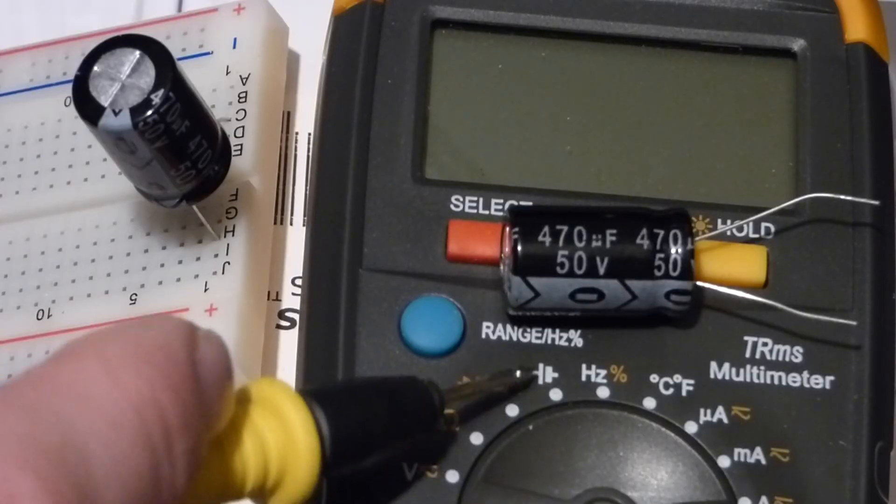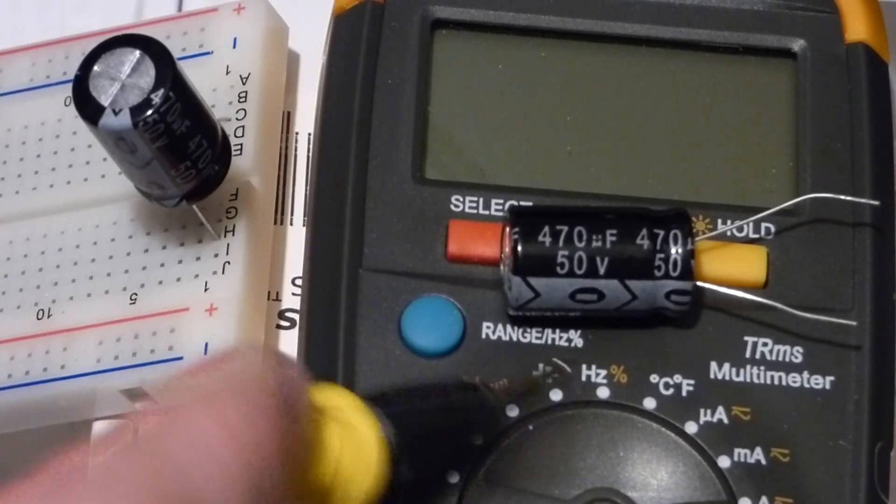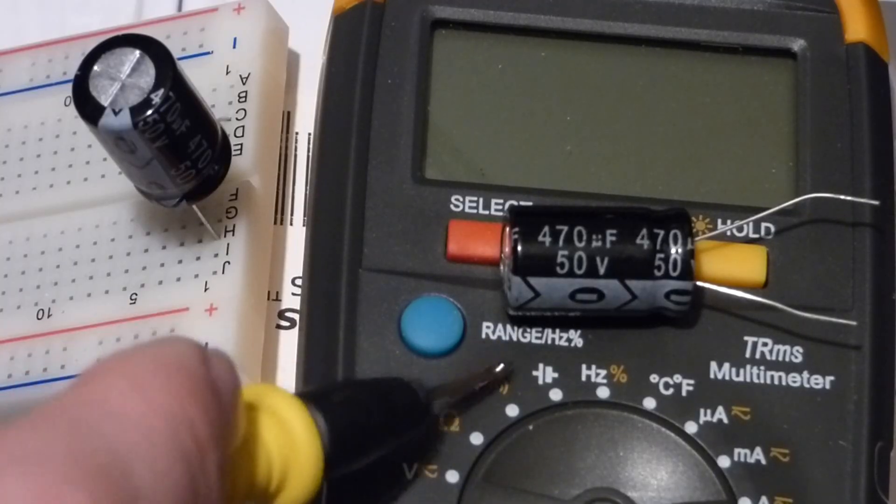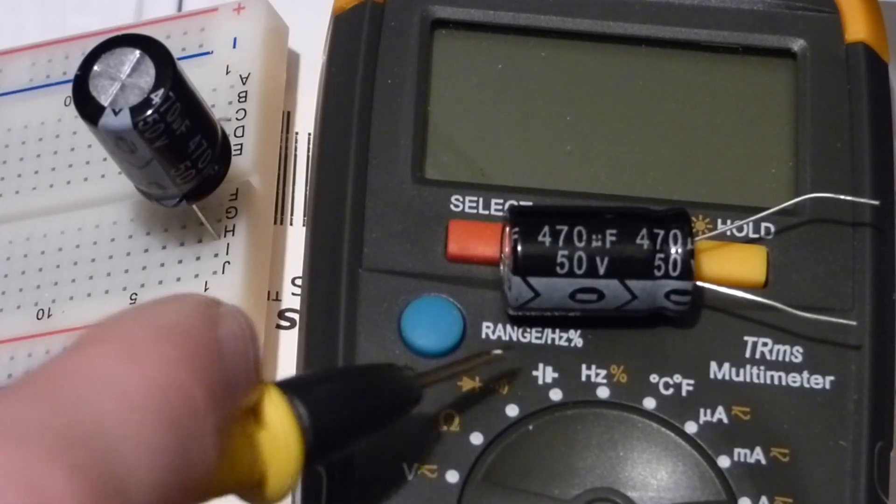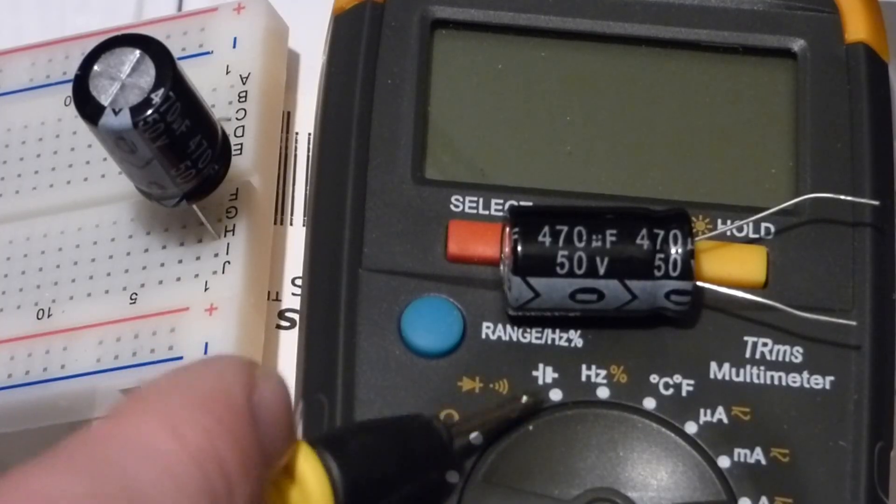Now we also have this multimeter. This multimeter can measure capacitance as shown in this symbol. Not all multimeters can measure capacitance. So if you want one that can measure capacitance make sure you see that before you buy it.